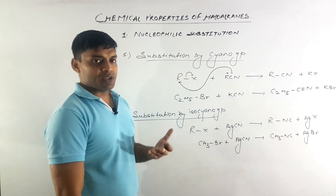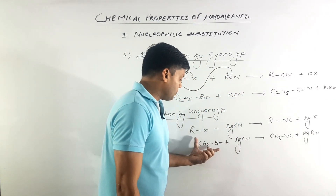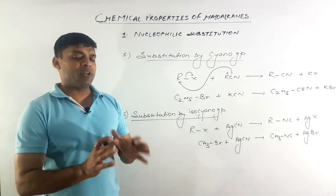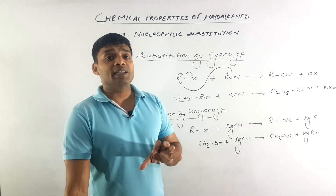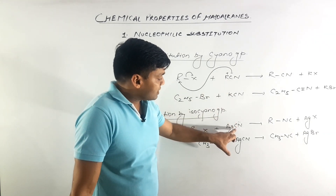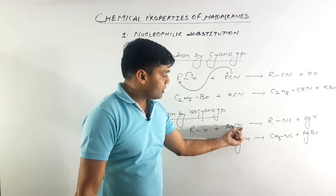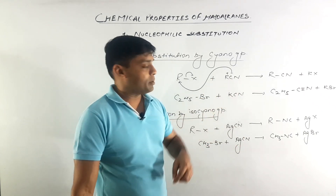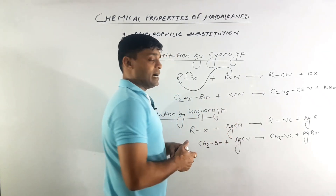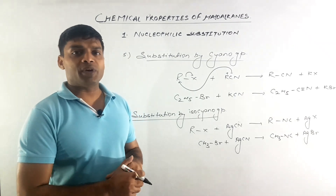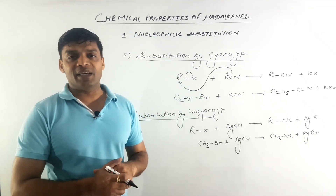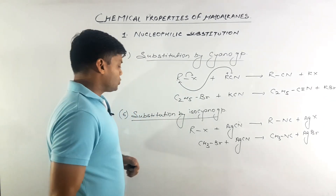This is a step-retention reaction — कोई step-up नहीं होता. Bromomethane से हमें मिला है methane isocyanide. Now these two reactions are very important from a conceptual point of view. एक बहुत important question यह discuss करना है कि potassium cyanide और silver cyanide दोनों में CN negative species है, but the question arises कि KCN से हमें cyanides क्यों मिलते हैं और AgCN से isocyanides क्यों मिलते हैं — what is the difference between these two reagents?